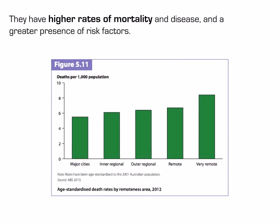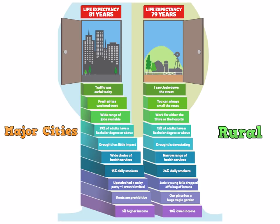People in rural and remote areas have higher rates of mortality and disease and a greater presence of risk factors. The nature of health inequities refers to what the health inequities are, and the extent refers to how severe they are. When comparing major cities with rural communities, life expectancy is higher in major cities. Rural communities have higher rates of smoking, alcohol consumption, lower levels of income and education, and are more likely to be affected by natural disaster. There are some positives, such as wide open spaces, fresh air, access to fresh food, and a greater sense of community.